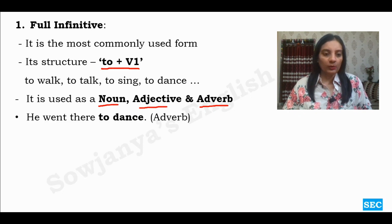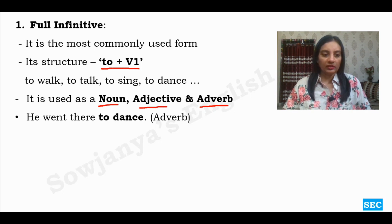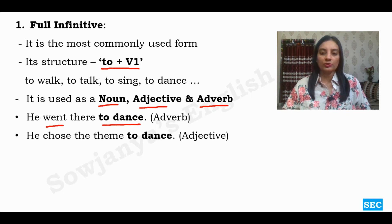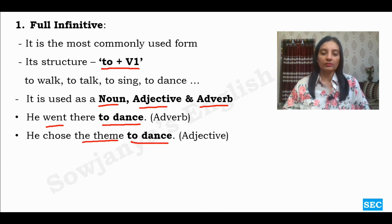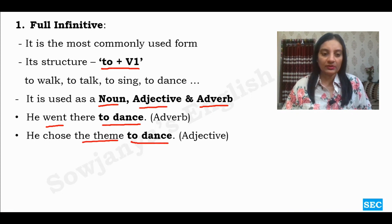Look at the examples. 'He went there to dance.' Here, why did he go there? It is modifying the verb 'went', so 'to dance' is acting as an adverb. Then, 'He chose the theme to dance.' He chose what sort of theme? A theme suitable for dancing. So here 'to dance' is acting as an adjective, modifying the noun 'theme'.